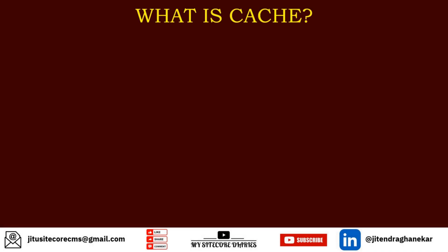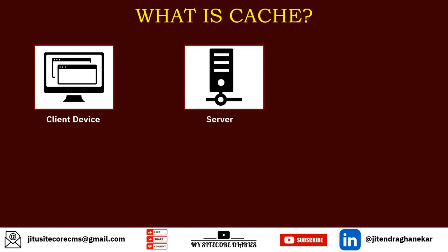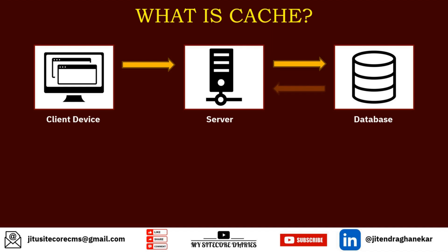So let's see what is cache. You have a client device — that can be your desktop, mobile, or laptop — then you have a web server, and then you have a database. Generally, when you have a web application, you request data from the server; the server connects to the database, gets the data back, processes it, and then sends it back to your device or browser.